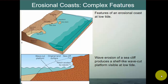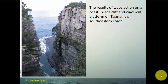On an erosional coast at low tide, you have sea arches, sea caves, big sea cliffs, and sea stacks. As water moves up, it erodes and breaks away the sea cliff, and below the level of the water you get wave-cut platforms — very flat features. Wave erosion of the sea cliff produces a shelf-like wave-cut platform, typically only visible at low tides. The flat, table-like structure between sea cliffs — as seen in Tasmania, south of Australia — is a wave-cut platform.